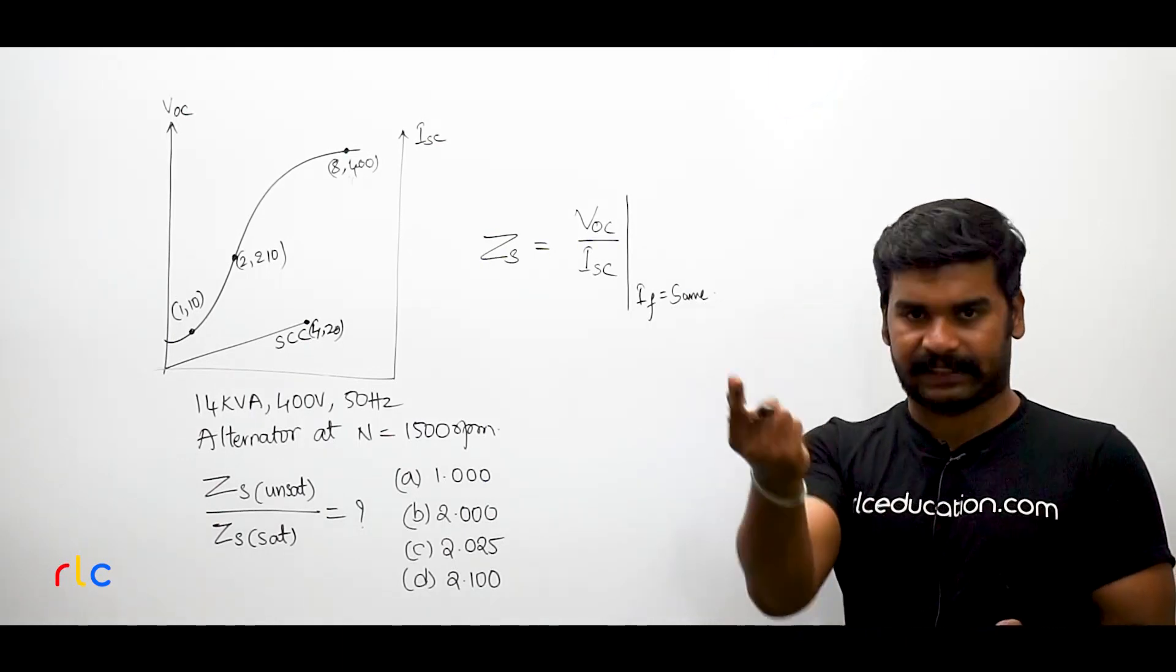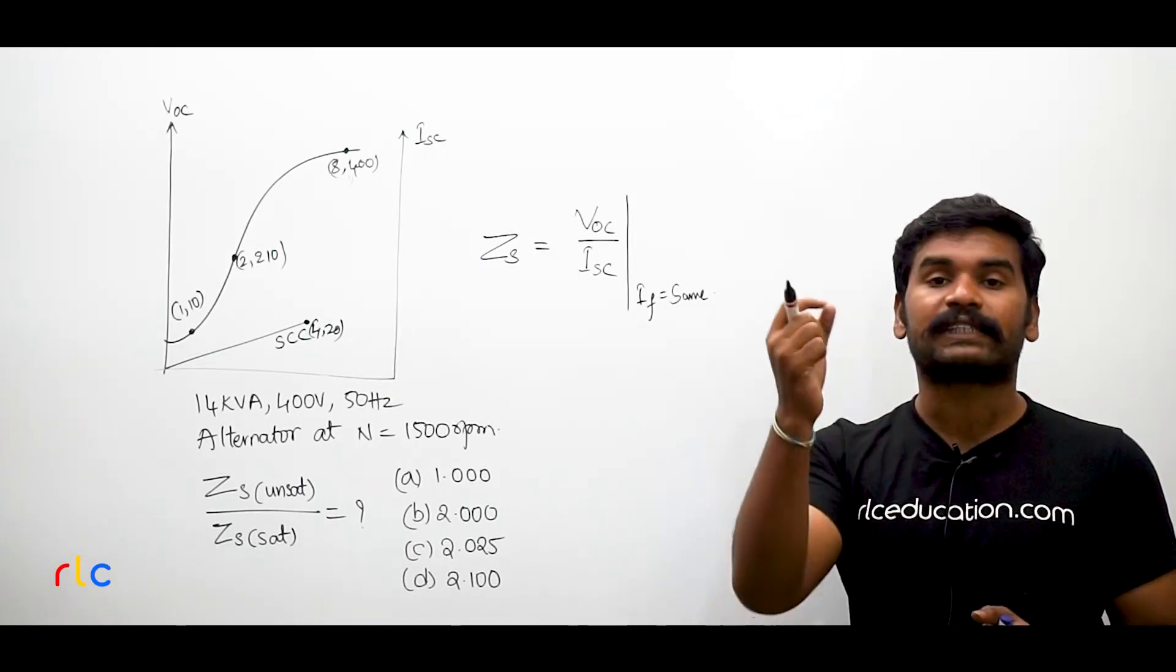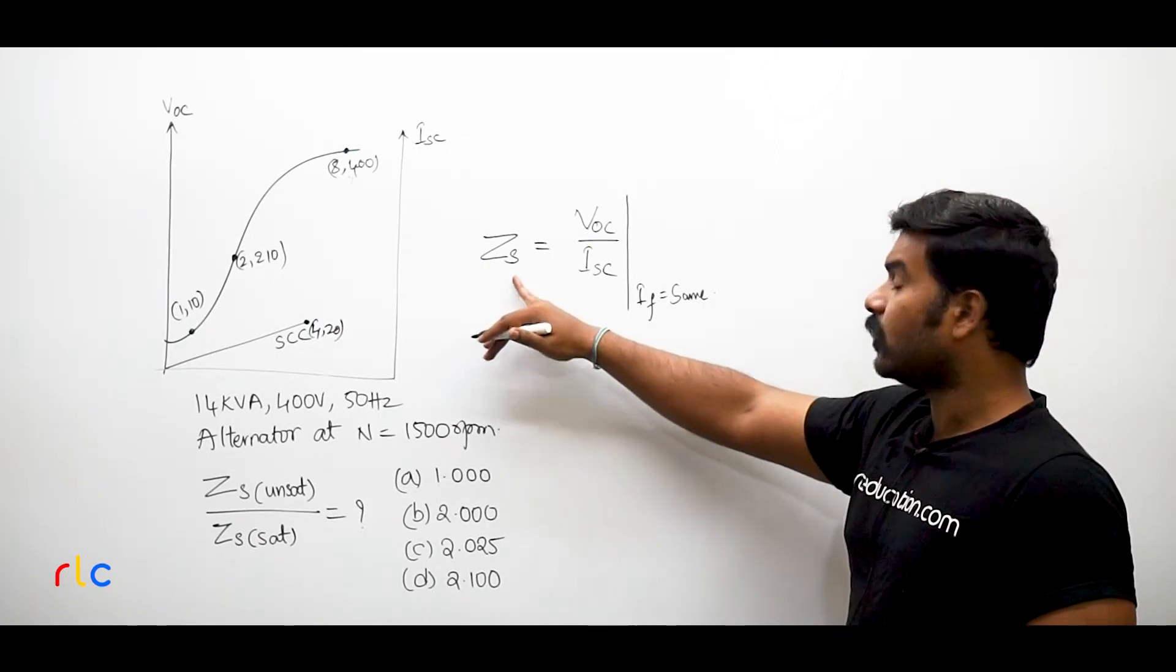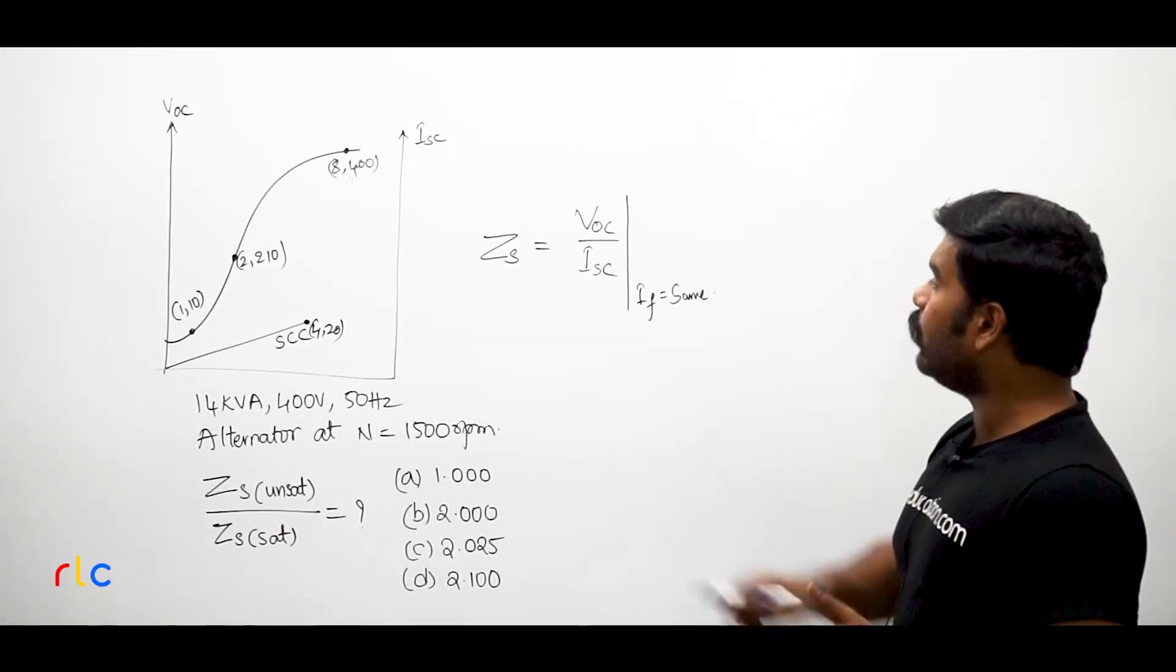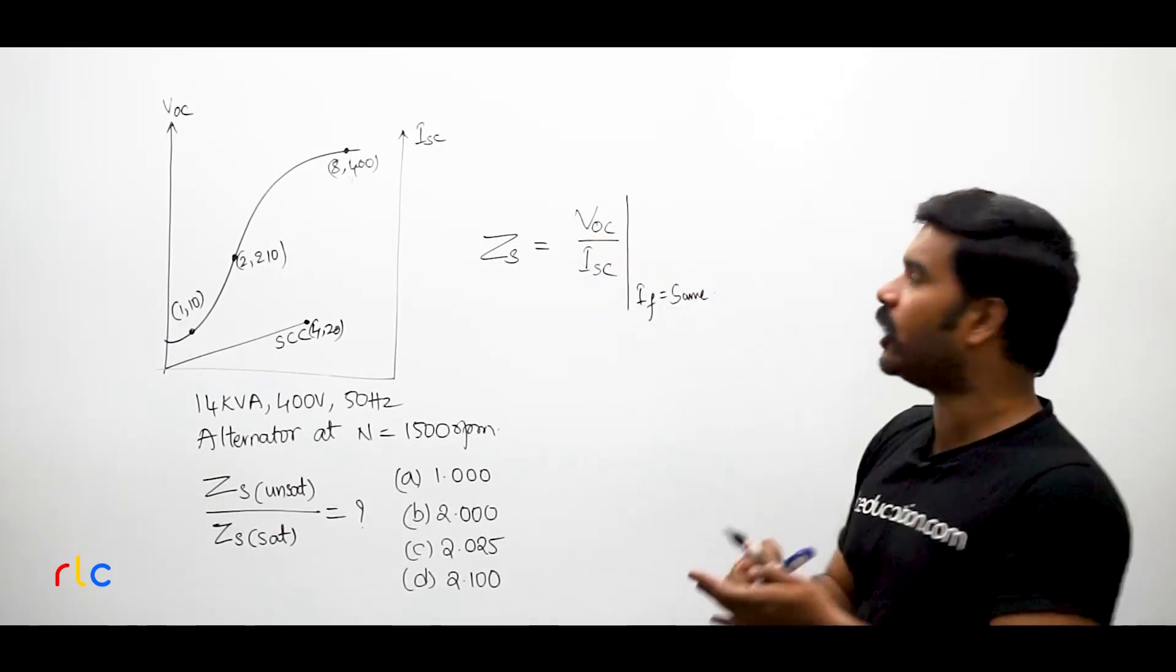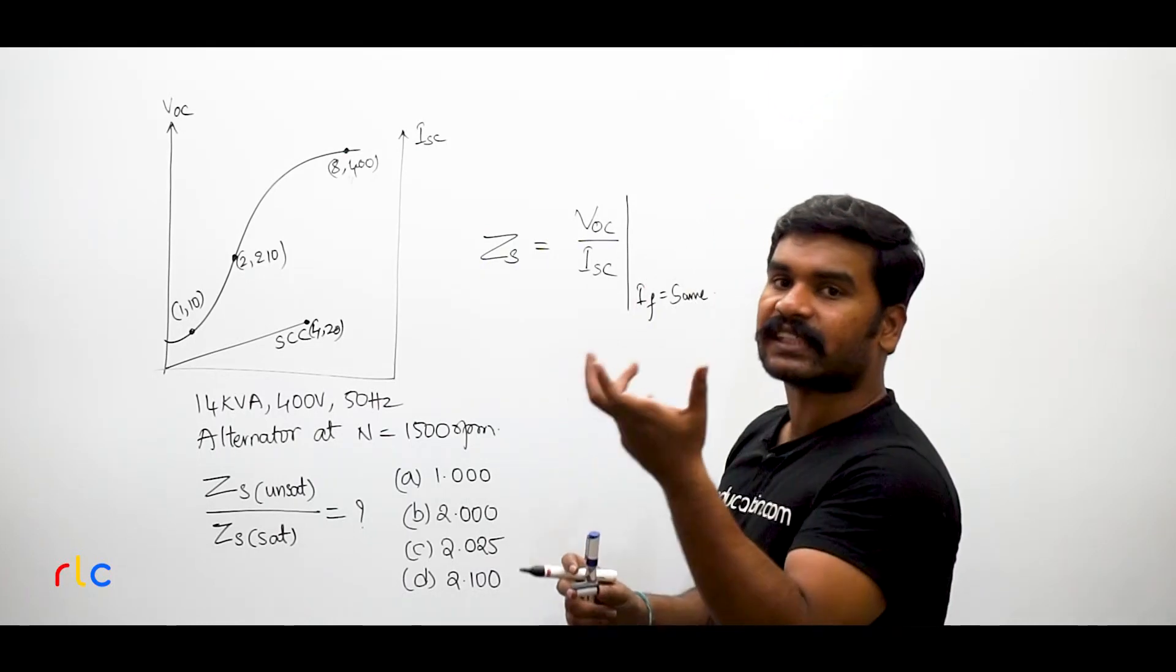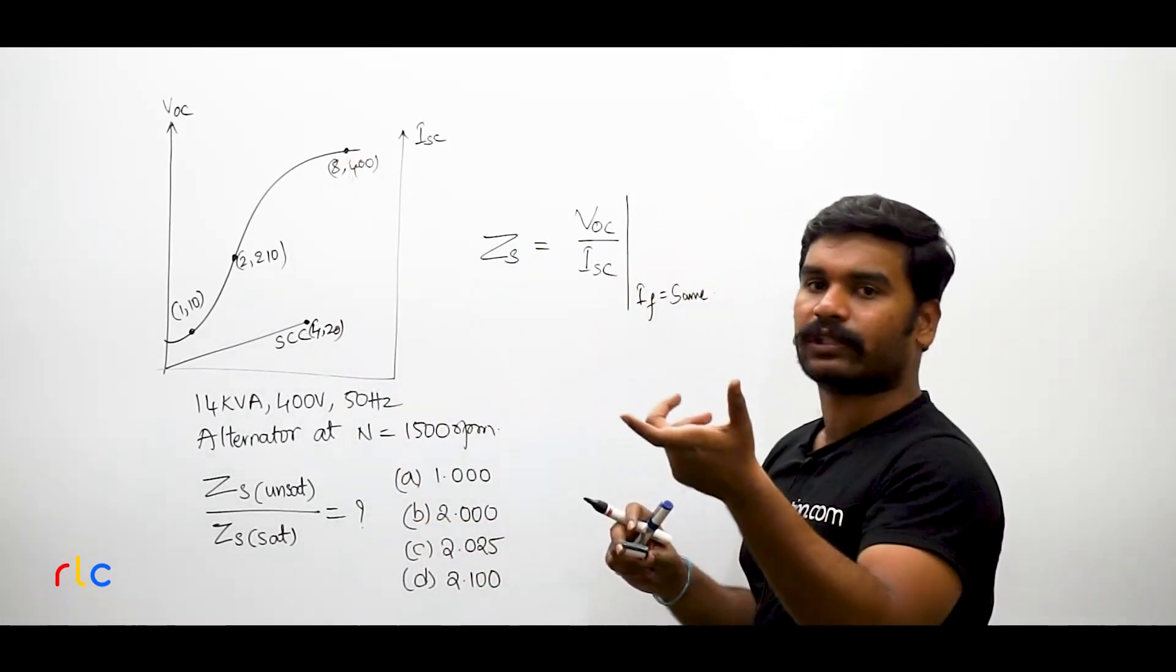What is the VOC there, that is what we require. That is how we calculate ZS. Suppose if you are taking the value of VOC after the saturation now, you see this is the OCC curve, isn't it? Now, where is the saturation point over here? This point corresponds to the saturated value, isn't it?